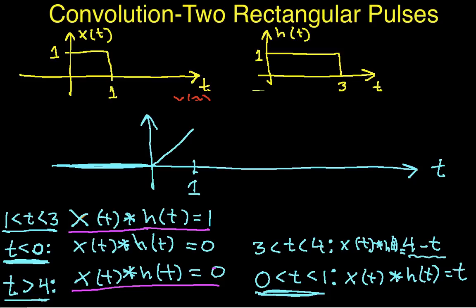Then for t between 1 and 3, I have this result over here. This line is just equal to 1.